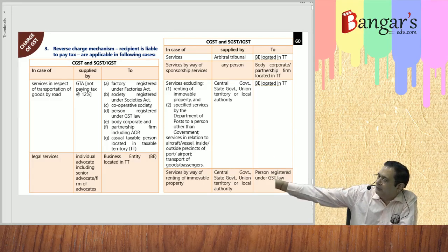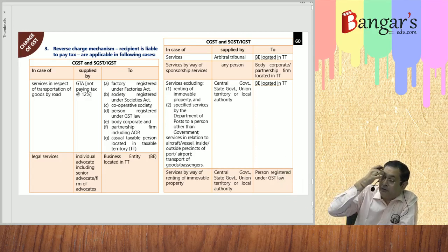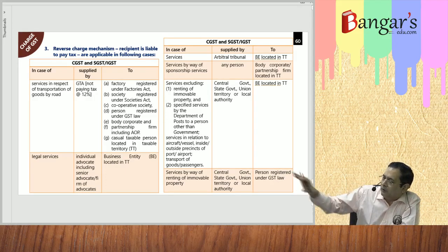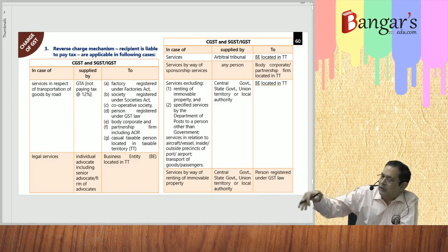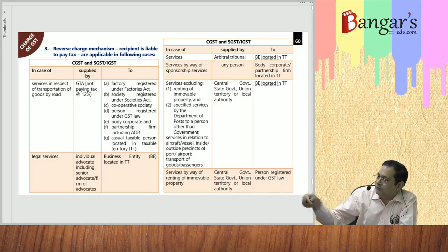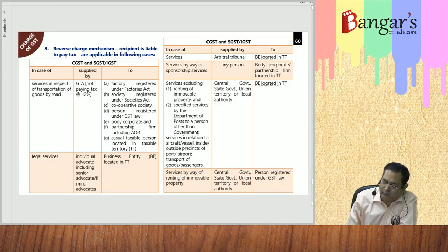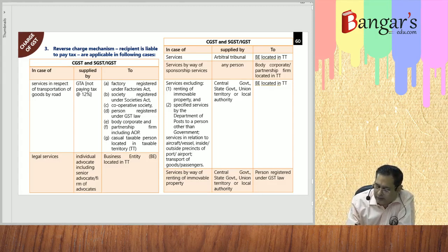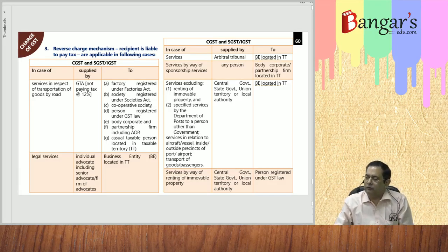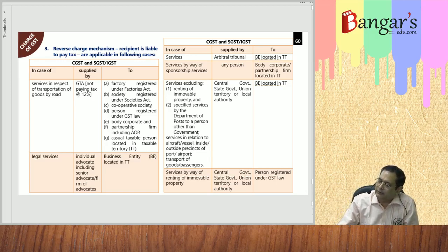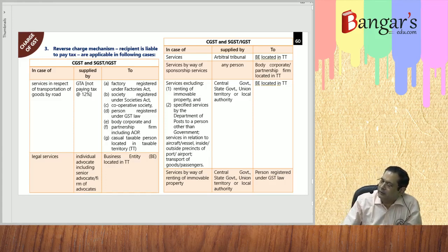Legal services provided by an individual advocate, senior advocate, or a firm of advocates to a business entity located in the taxable territory attract reverse charge — the business entity is liable to pay GST. Similarly, where an arbitral tribunal provides services to a business entity located in the taxable territory, reverse charge mechanism applies and the business entity is liable to pay GST.